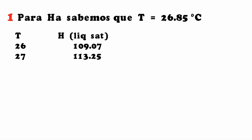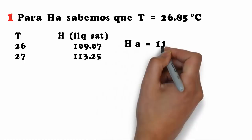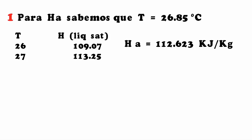We interpolate between temperatures 26°C and 27°C and their corresponding saturated liquid enthalpies. The result is HA equals 112.62 kJ/kg.